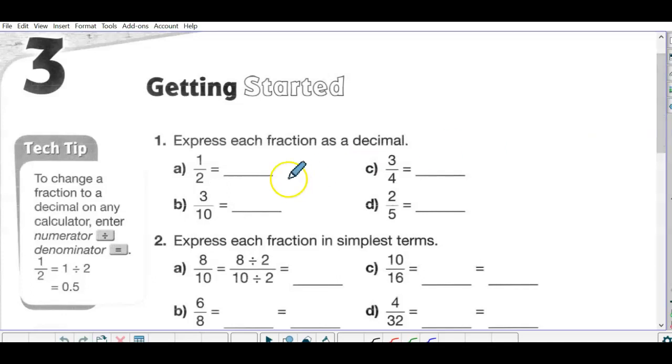Really you should know these ones off by heart, but the tech tip over here on the right just reminds you it's numerator divided by denominator. A half you should know is 0.5. Three tenths, so think about one tenth is 0.1 as a decimal and you've got three of them, so that's going to be 0.3.